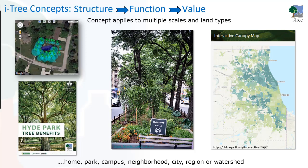The concept of structure, function, and value applies to multiple scales and land types. It's not just something we see at the city or park level — it could also apply to small scales or even an individual home. The decisions a homeowner makes in terms of planting trees and their placement can affect things like energy effects. So these concepts can apply to many different scales and land types.